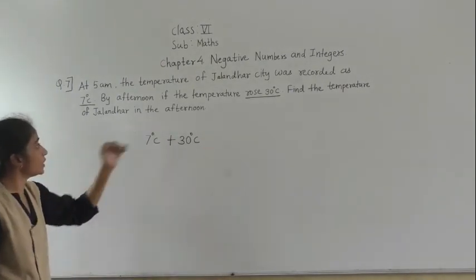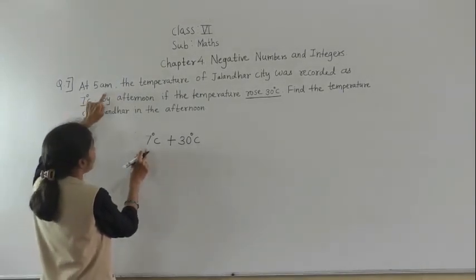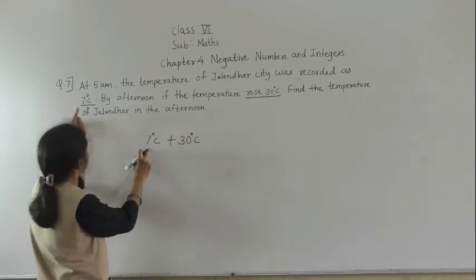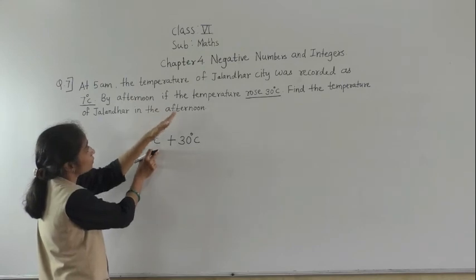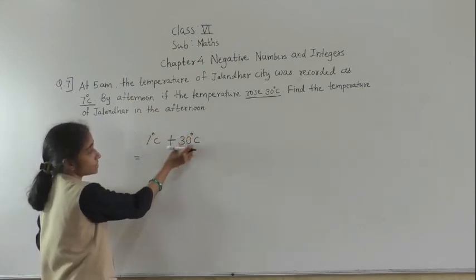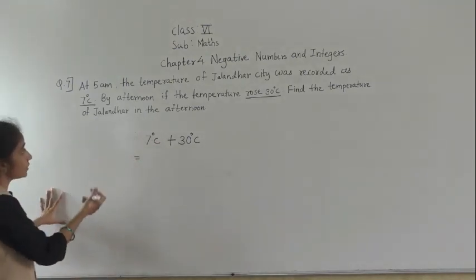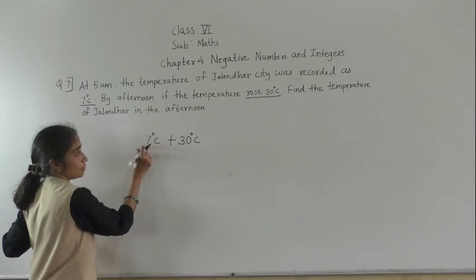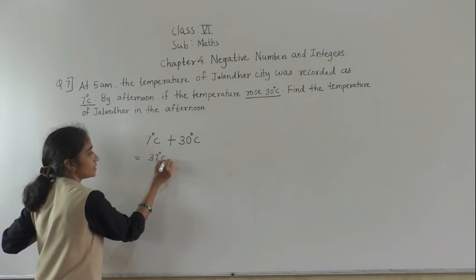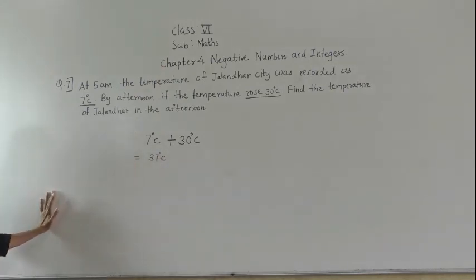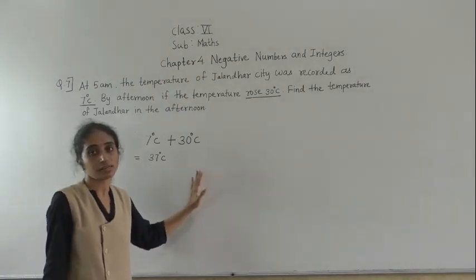The temperature at 5 AM in Jalindal City was 7 degrees Celsius. The temperature rose 30 degrees Celsius by afternoon, so plus 30 degrees Celsius. Plus plus plus: 30 plus 7 equals 37 degrees Celsius. So the temperature in the afternoon is 37 degrees Celsius.